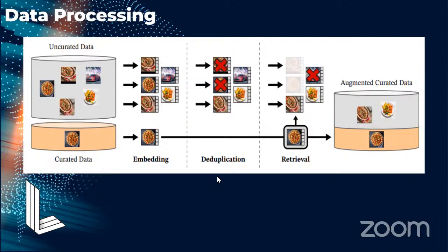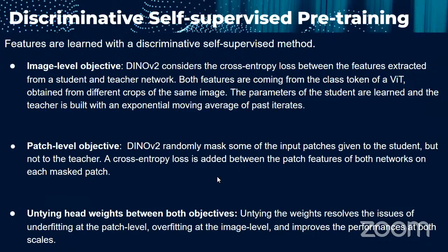This was done by computing an image embedding using a self-supervised vision transformer network trained on ImageNet-22K, with cosine similarity as a distance measure between images, followed by K-means clustering of the uncurated data. The second part of the pipeline is discriminative self-supervised pre-training. Features are learned with a discriminative self-supervised method involving an image-level objective, where DINOv2 considers the cross-entropy loss between features extracted from student and teacher networks, both coming from the class token of a vision transformer obtained from different crops of the same image. The student parameters are learned and the teacher is built with an exponential moving average of past iterates.